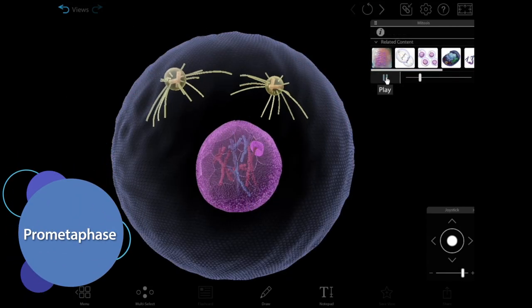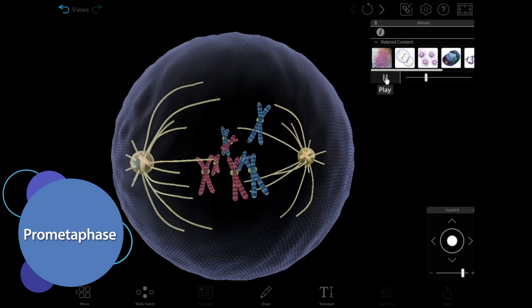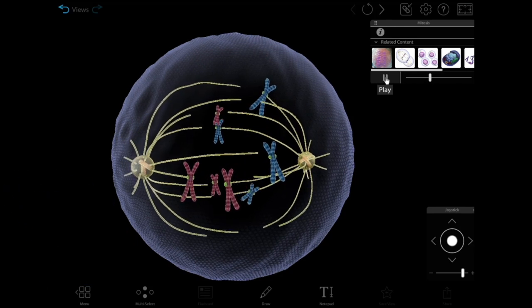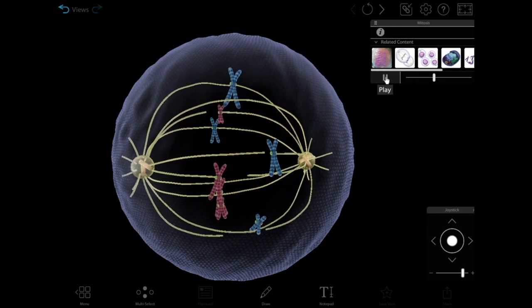During prometaphase, which Visible Biology shows as its own step, the nuclear envelope dissolves and the spindle fibers extend and attach to the chromosomes.